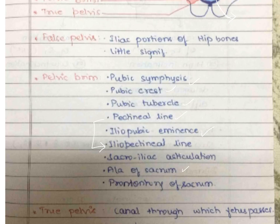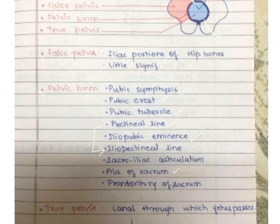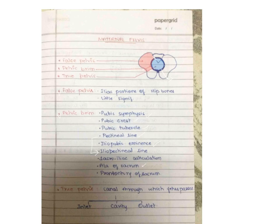The true pelvis is the canal through which the fetus passes. It is four centimeters anteriorly, bounded by the pubic symphysis, and 11.5 cm or four and a half inches posteriorly, bounded by the sacrum and coccyx. The true pelvis is of utmost obstetrical importance, while the false pelvis has only a weight-bearing function.